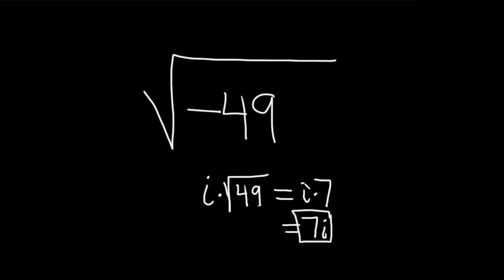But there's really a better way to do this, in my opinion. So when I see something like this, I don't do any of this. I see the negative in the square root, and I know that's going to give me an i. And then the square root of 49 is 7. Boom.